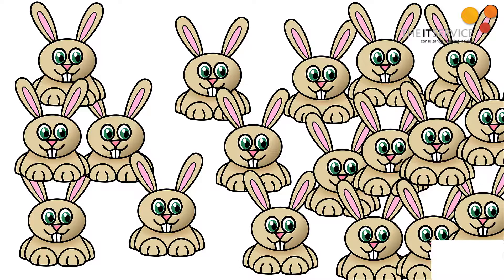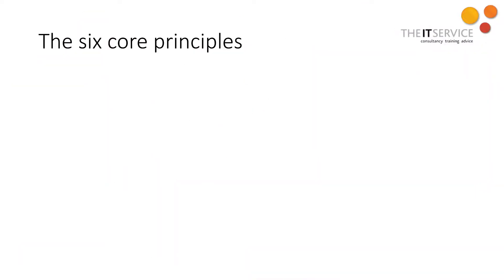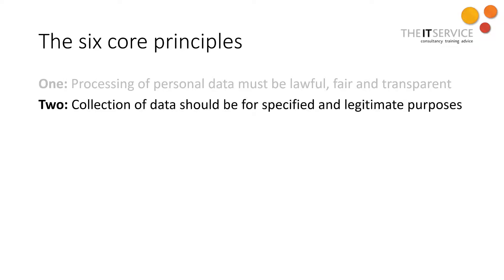The second principle says that the collection of personal data should be for specified and legitimate purposes. In other words, tell people what you're collecting data for and then do just that. If you're saying, can we have your email so that we can send you a receipt? Then sending the receipt is your specified purpose, not adding me to your mailing list forever. If I sign up to attend an event, you can send me the information about that event, but not your life insurance policy product, unless you specify that my data is being used for marketing purposes.